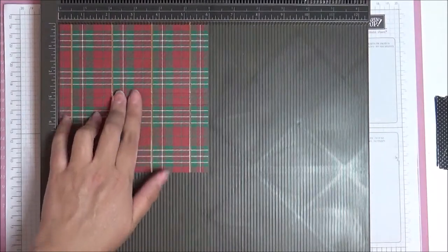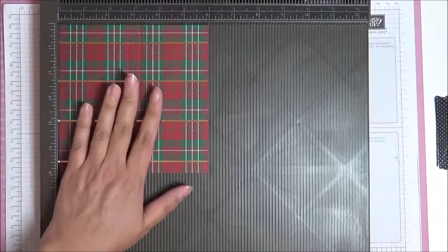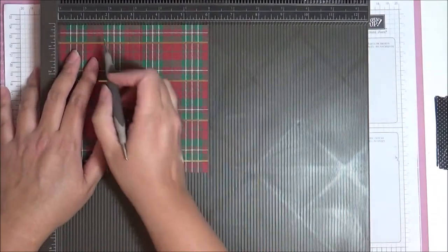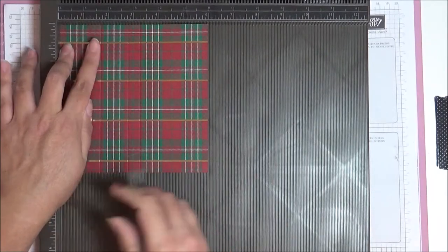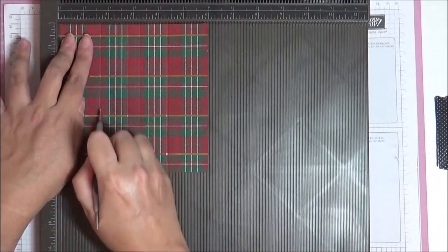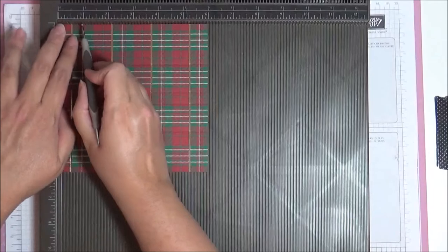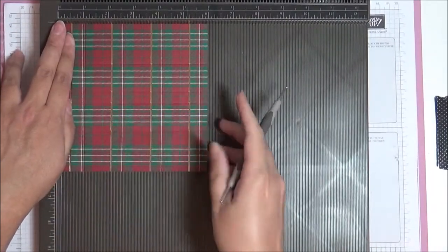I've got a piece here of the Wrapped in Plaid Designer Series Paper and I'm going to be using the full 6x6 inch piece. We're going to score at 1 and 5 eighths on one side, flip around and score again at 1 and 5 eighths, and then turn it round again and score at 1 inch.